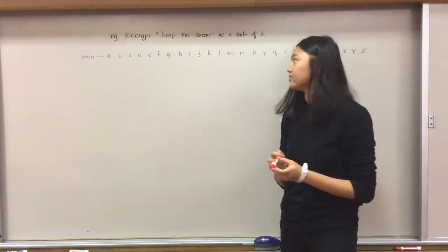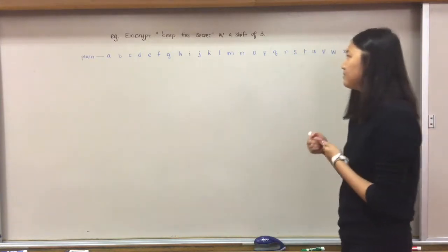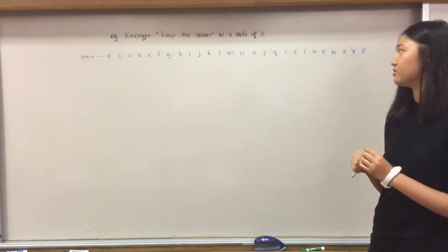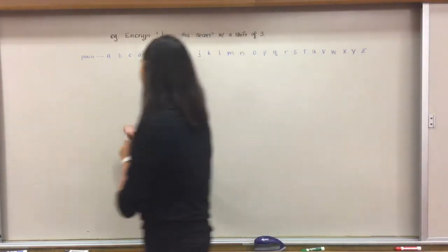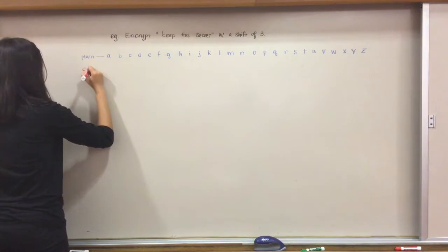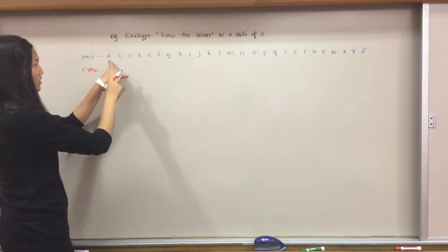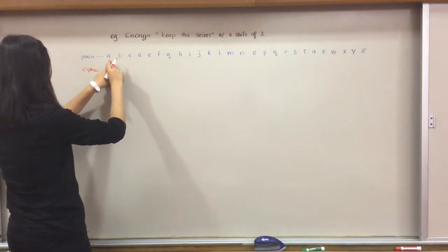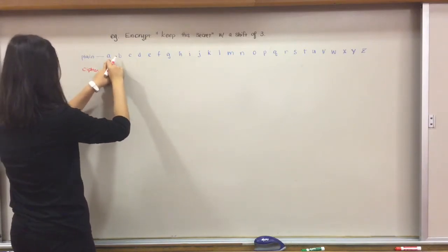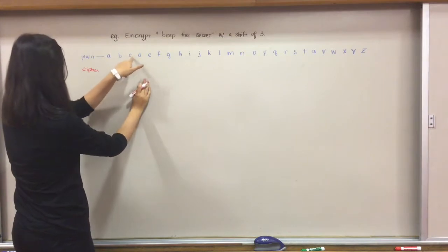We're going to do an example for this. We're going to encrypt 'keep this secret' with a shift of three. So we're going to shift a over three spaces. For this, we'll say a, one, two, three. So a maps onto d.